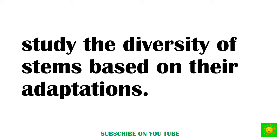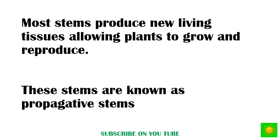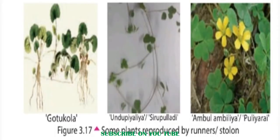Let's study the diversity of stems based on their adaptation. Most stems produce new living tissues allowing plants to grow and reproduce. These stems are known as propagative stems. Examples of plants that reproduce by runners and stolons include gotukola, colour, unthu, and pear.